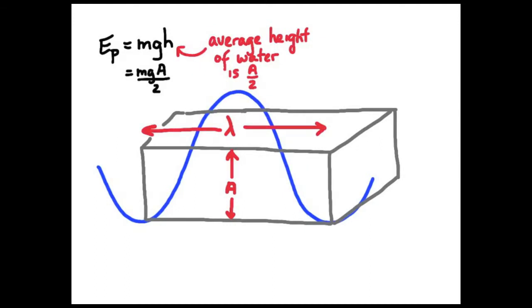Giving us the gravitational potential energy of the wave equal to MGH over 2, where of course A is the amplitude of the wave.